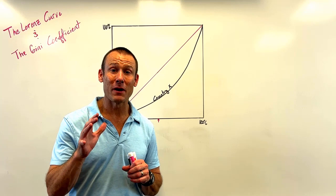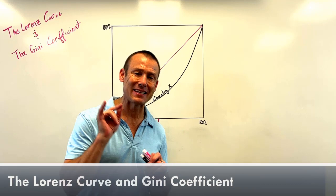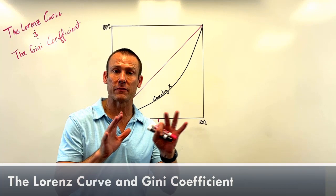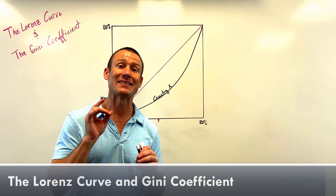Want to represent income inequality of a country with a single line? Want to represent it with a single number? That's what we're talking about in this video — the Lorenz curve, a way to represent income inequality with a single line, and the Gini coefficient, a way to represent it with a single number.